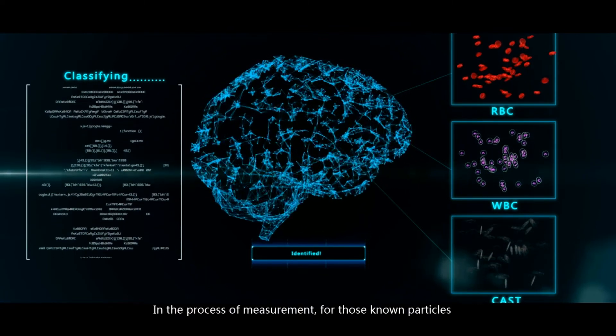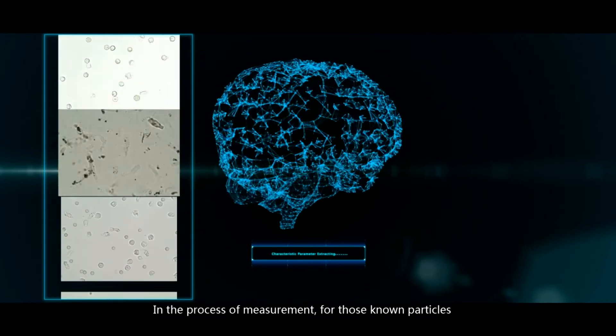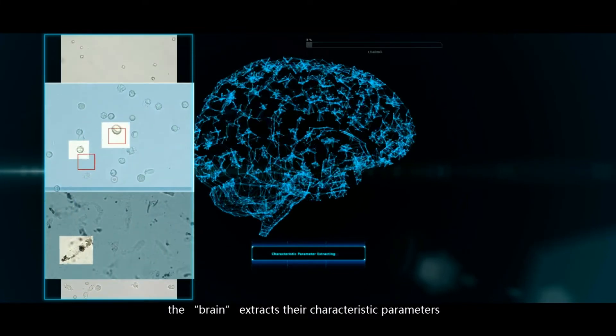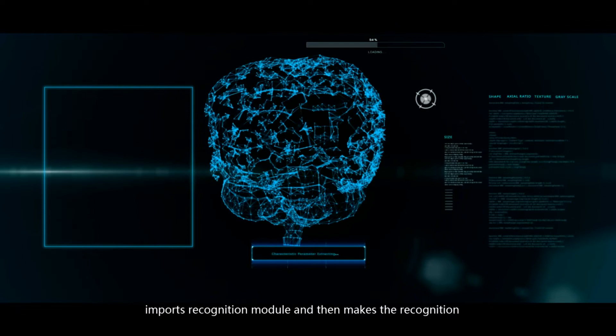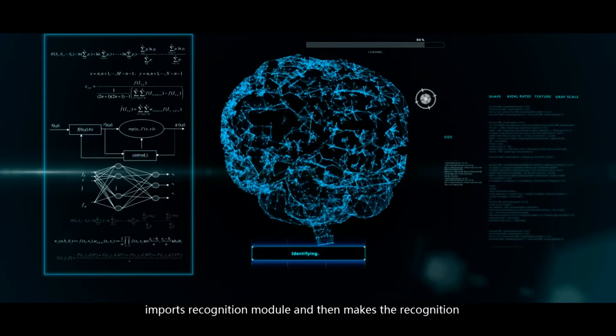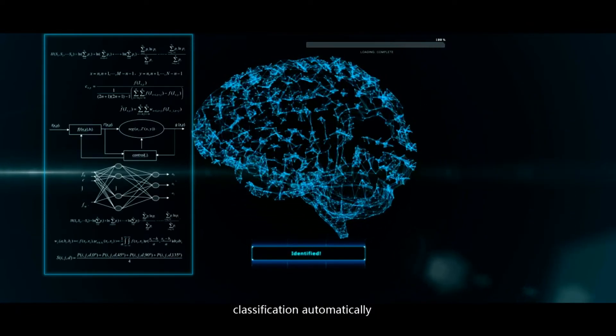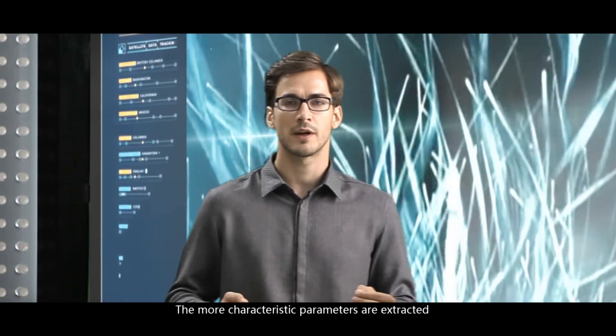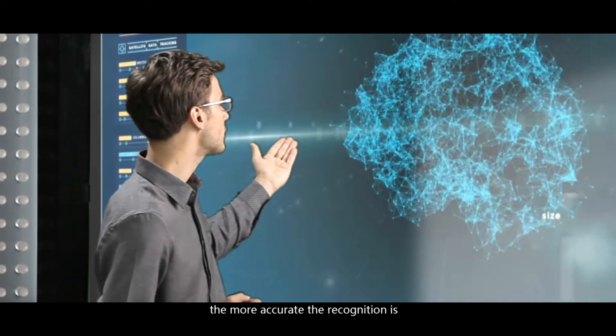In the process of measurement, for those known particles, the brain extracts their characteristic parameters, imports recognition module, and then makes the recognition classification automatically. The more characteristic parameters are extracted, the more accurate the recognition is.